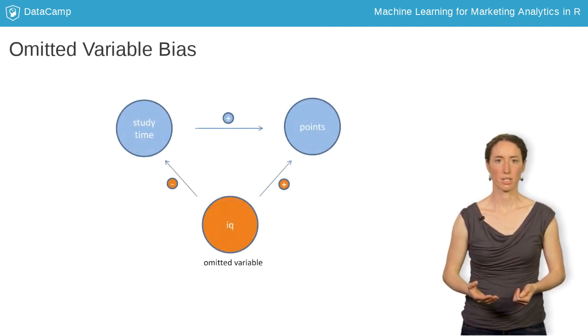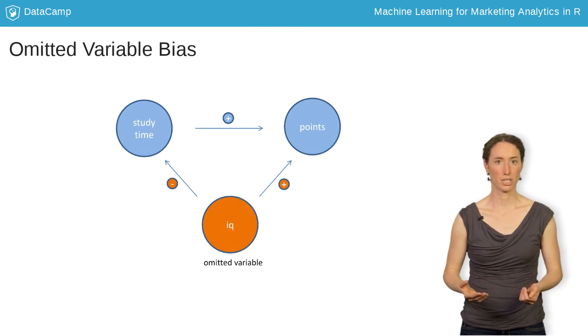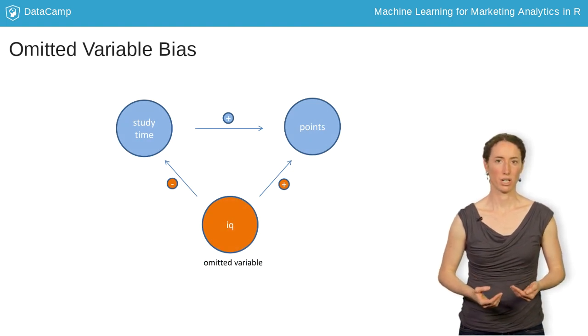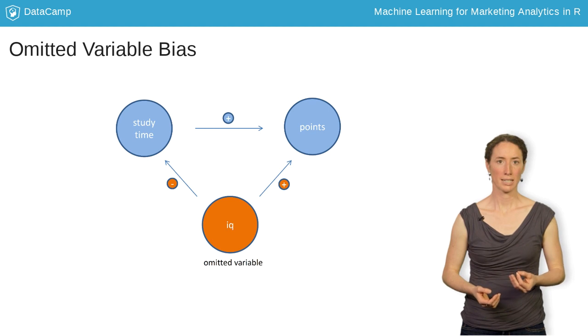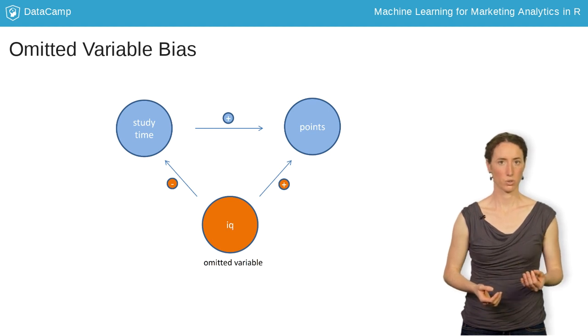One threat to the accuracy of simple linear regression is what's called omitted variable bias. This occurs when a variable not included in the regression is correlated with both the explanatory variable and the response variable.